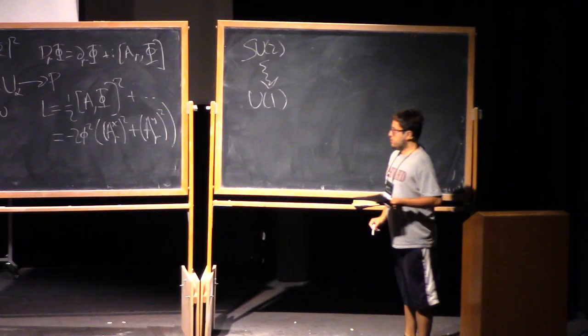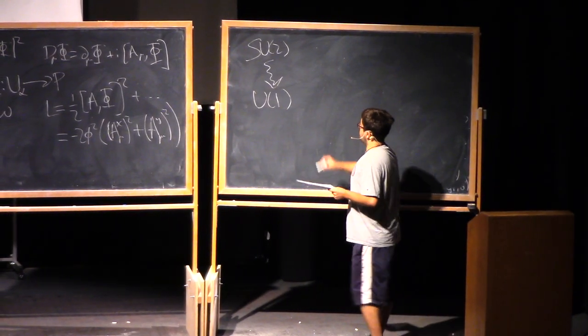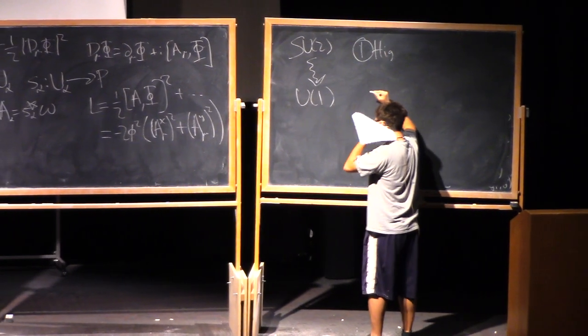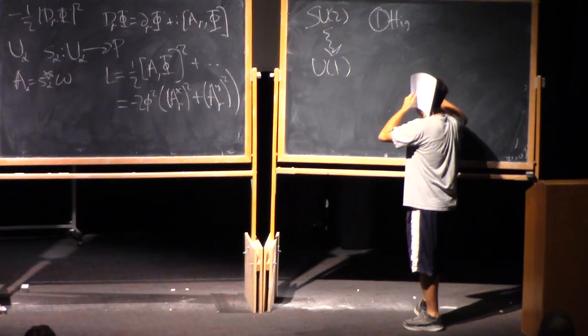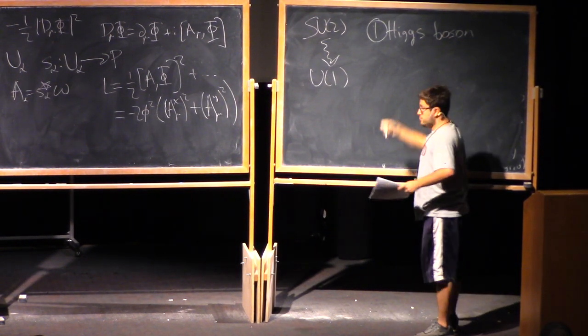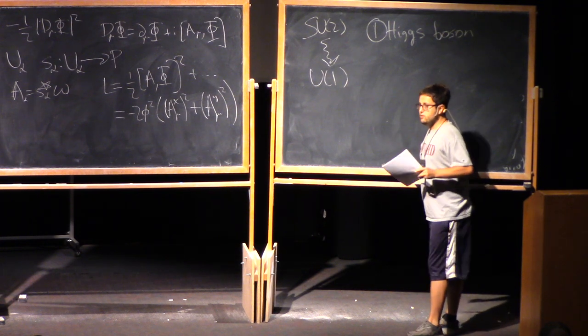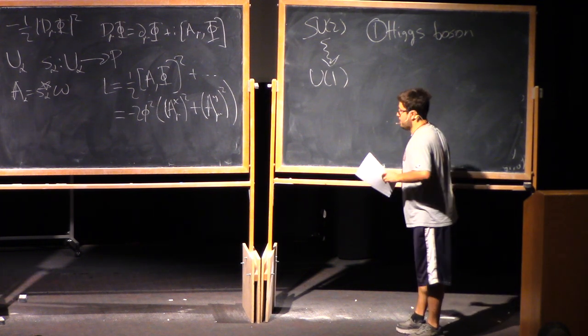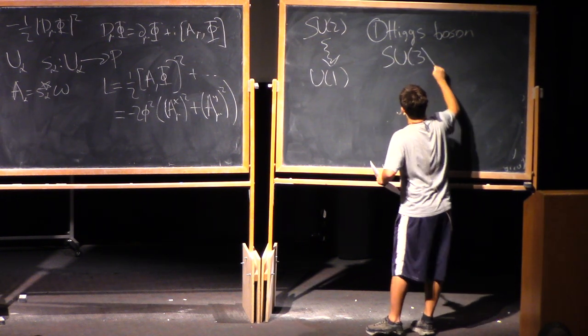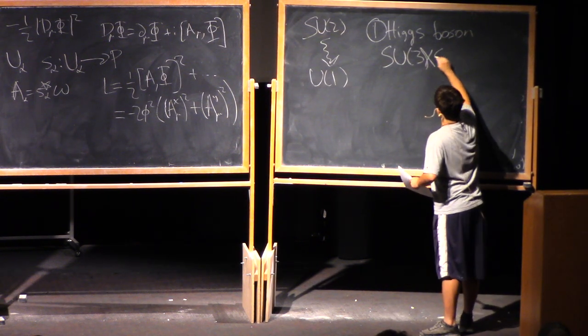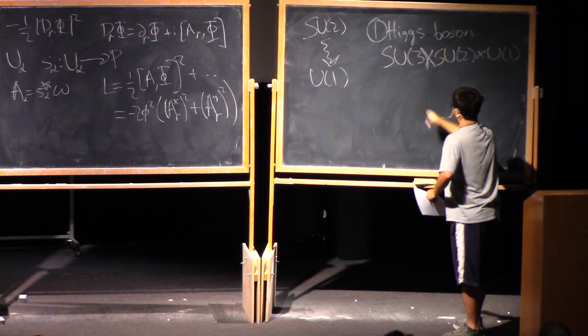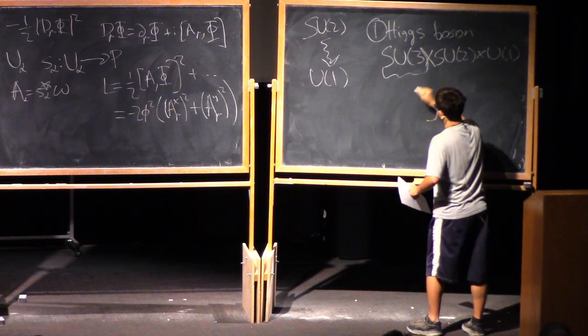All right, so where are a few applications of this? Well, one, as you may have guessed from the name, is the Higgs boson. The Higgs boson is actually in a slightly different representation of SU2, but I chose this one because it'll be better for application number two. But you might be familiar with the fact that the gauge group of the standard model is SU3 times SU2 times U1.